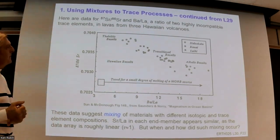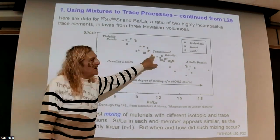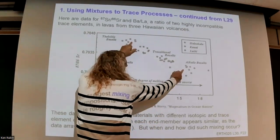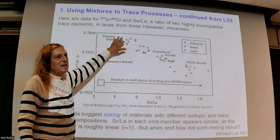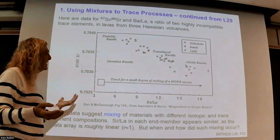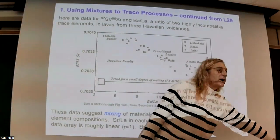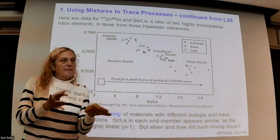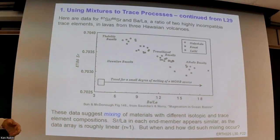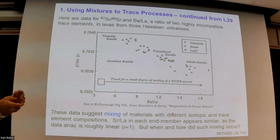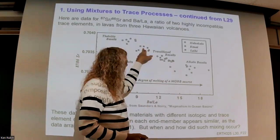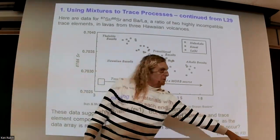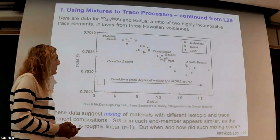In modeling, you get to choose your end members, and two rules apply: never put end members inside the array, because then you can't produce compositions outside them; and unless you have good logic that one end member is way outside the range and you're mixing in small amounts — as with contamination of country rock, where you can see the country rock and measure it — we usually pick end members just a little bit outside the observed range.